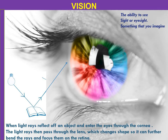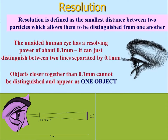This is the general vision of our eye. What is the resolution of our eyesight? Resolution is defined as the smallest distance between two particles which allows them to be distinguished from one another. If you keep two objects at a distance of 0.1 millimeters and those two objects are one meter away from your eyesight, then your eye is able to distinguish the two objects as two separate objects.